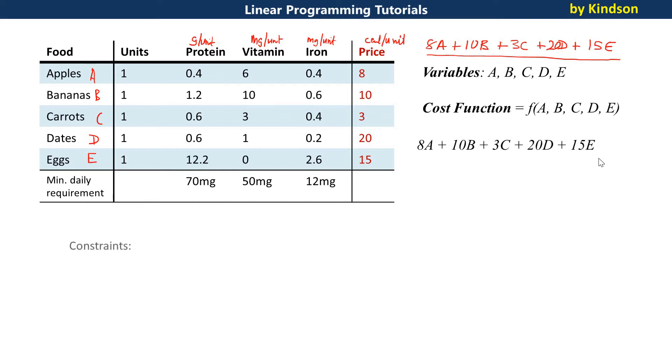The next thing we are going to determine is the constraint. The minimum daily requirement of protein is 70 mg. For vitamin, the minimum daily requirement is 50 mg. And for iron, the minimum daily requirement is 12 mg. Can we form a constraint from here? Yes.